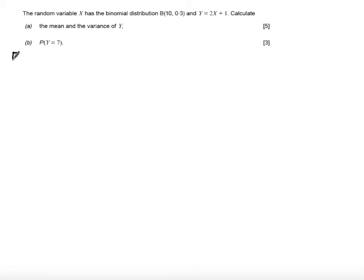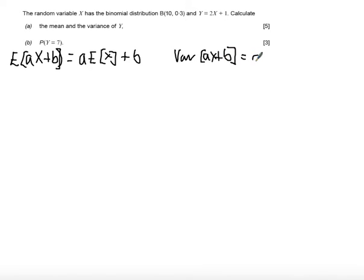To find the mean and variance of Y, we're going to use the property E(aX + b) = a·E(X) + b, and Var(aX + b) = a²·Var(X).